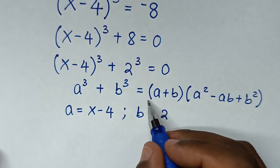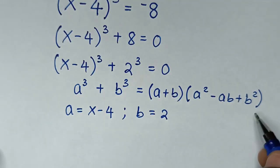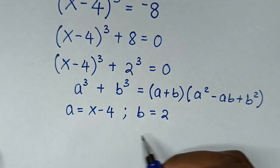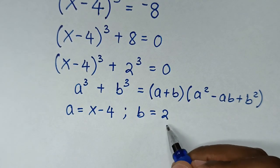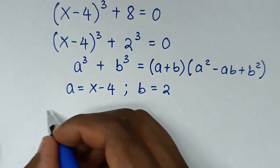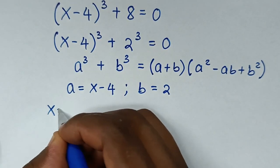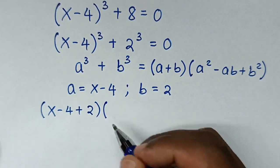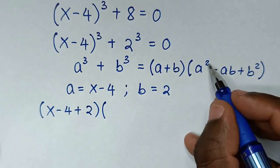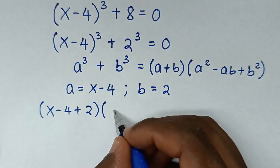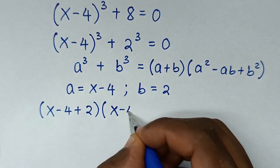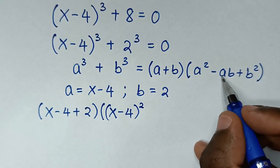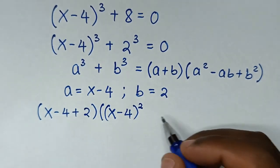Applying the formula, the first factor (a + b) gives us (x - 4 + 2). The second factor begins with a², which is (x - 4)², then minus ab, which is (x - 4) times 2.